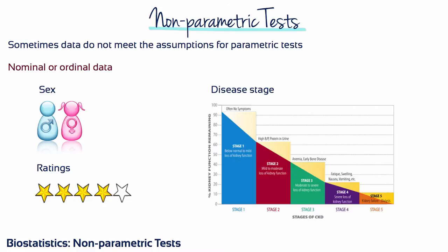An example is the nominal variable sex, where calculating a mean is nonsensical. If you wanted to know if groups differ on sex, you would not calculate the mean sex for each group. Another example is disease stage of kidney function, which is an ordinal variable. Again, comparing means between groups would not be appropriate. Whenever you have ratings, you are working with an inherently ordinal variable.